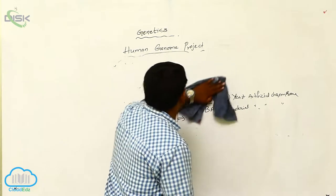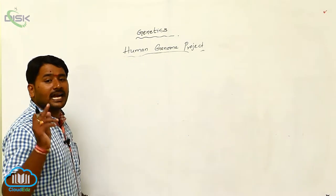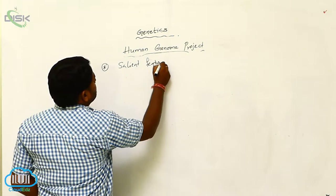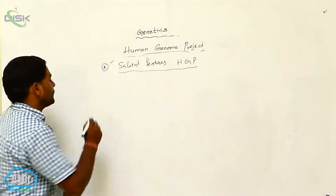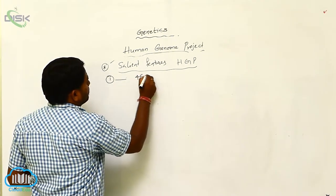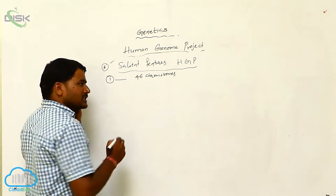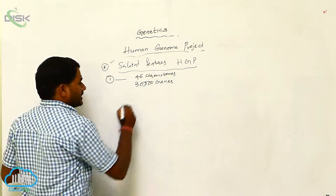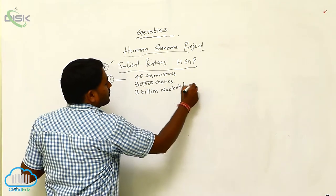What are the salient features of the Human Genome Project? First, there are 46 chromosomes present in the human genome. Second, 30,000 genes are sequenced and identified. Third, 3 billion nucleotides are identified.